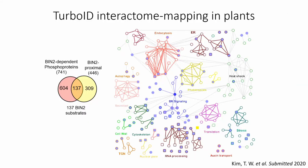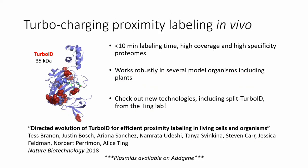Our own organizer Xianglong's group has also been using TurboID in cool work to map the interactors and substrates of a kinase called Bintu in Arabidopsis. In summary, we have used directed evolution to develop this new proximity labeling tool that we hope will open many more biological questions for investigation in plants. The original TurboID publication can be found in Nature Biotechnology, and all of our plasmids are on Addgene — please check them out.